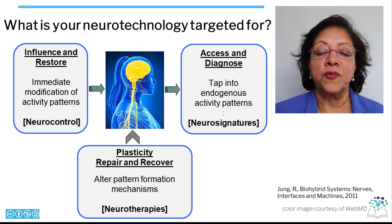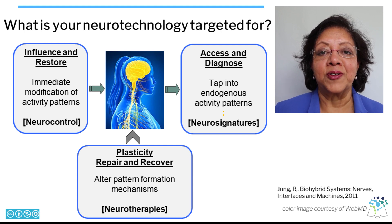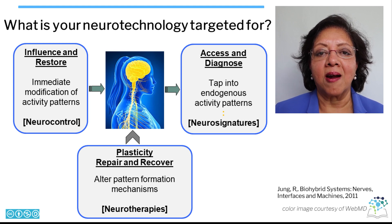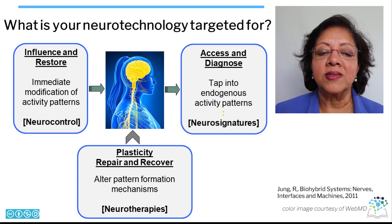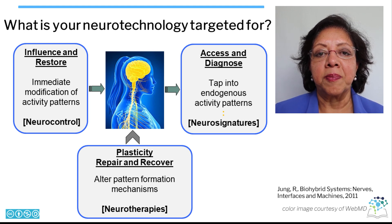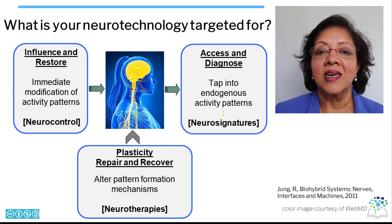The nervous system functions by generating patterns of neural activity. These patterns underlie sensation and perception as well as control of movement, cardiovascular, endocrine, immune, and other functions. Technology can interact with the nervous system to access neural activity patterns, to influence neural activity patterns, or to fundamentally alter the pattern formation mechanisms — that is, promote learning and plasticity.